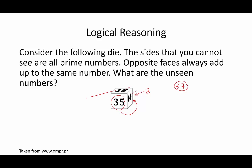Hence, the number opposite to 18 will be 37 minus 18, that's 19. And 37 minus 14, that is 23, will be the number that goes on that left face.